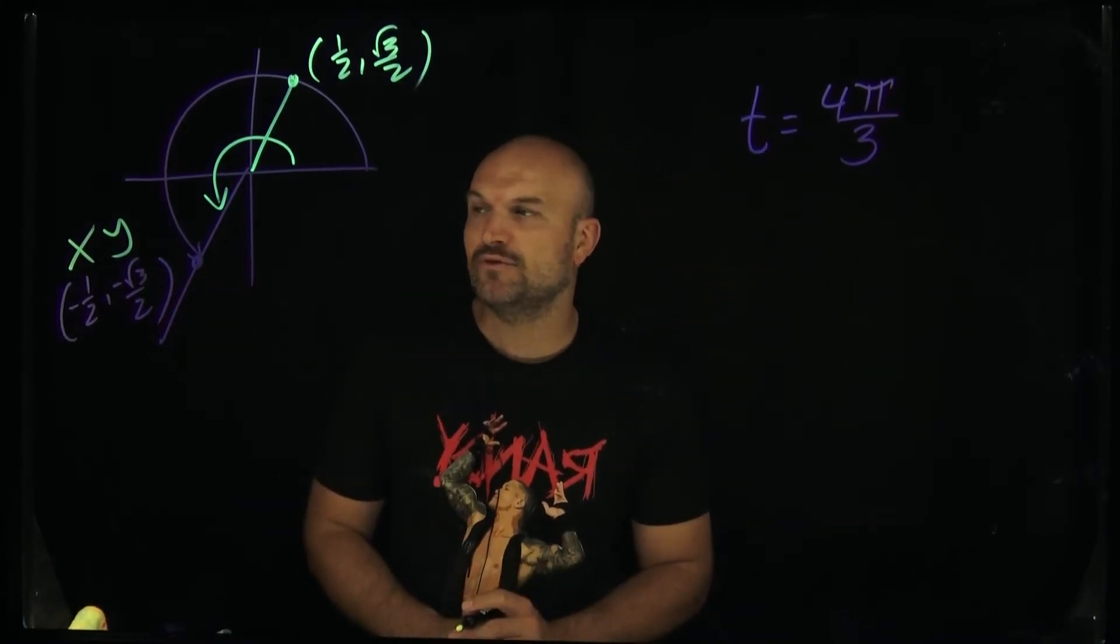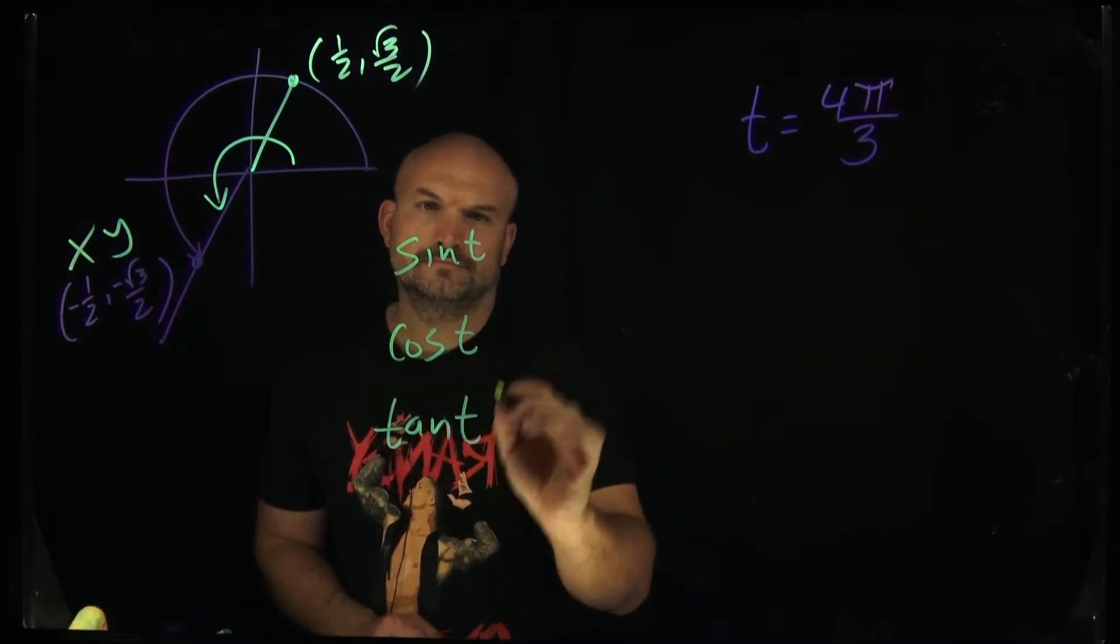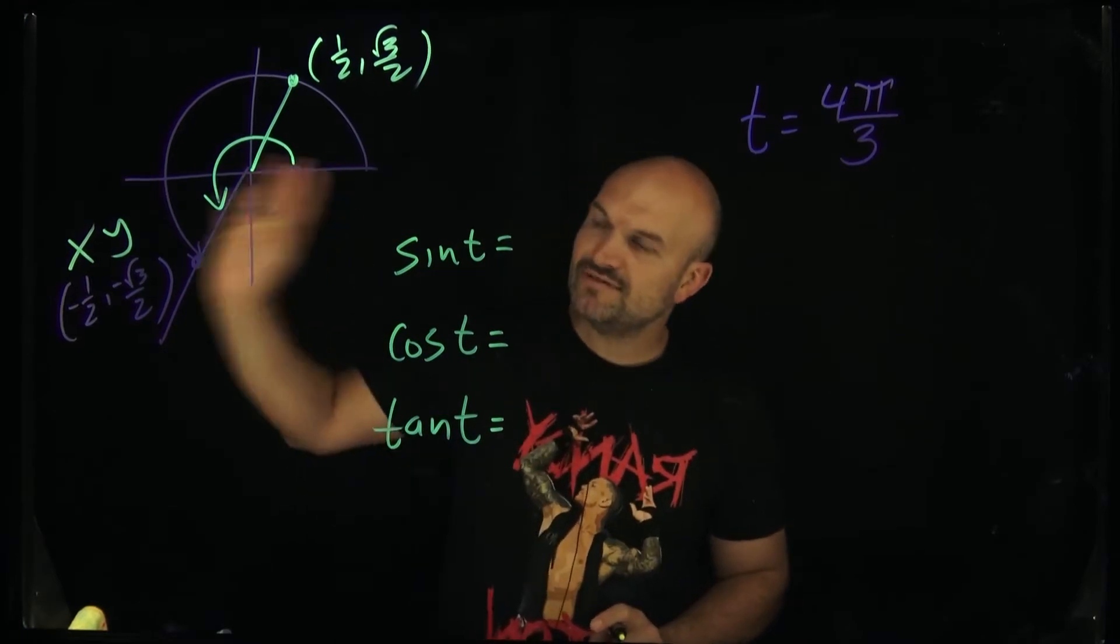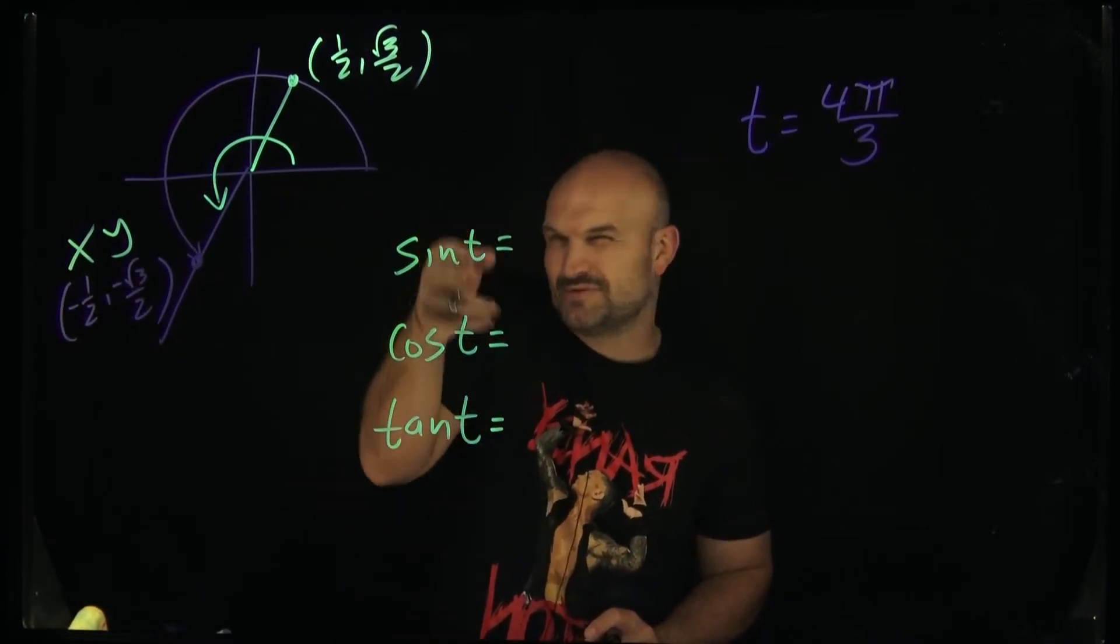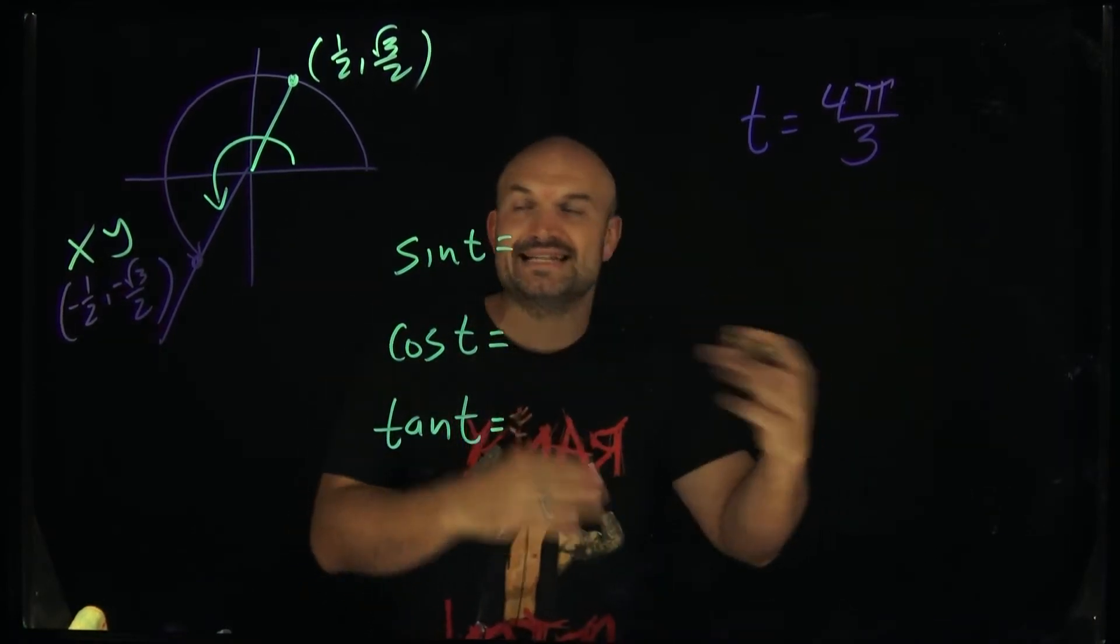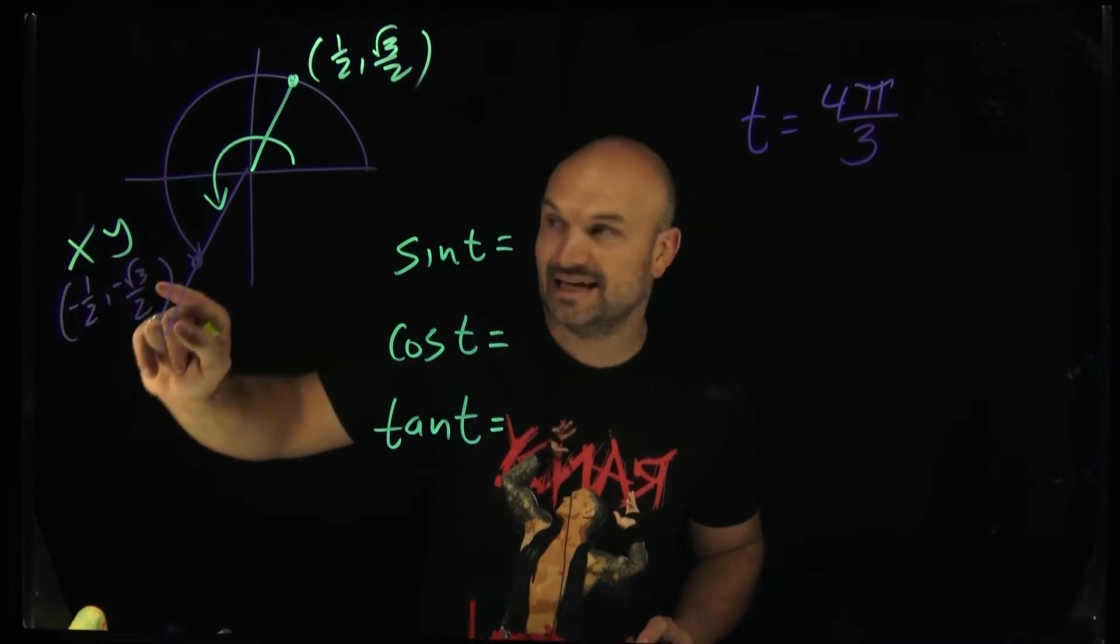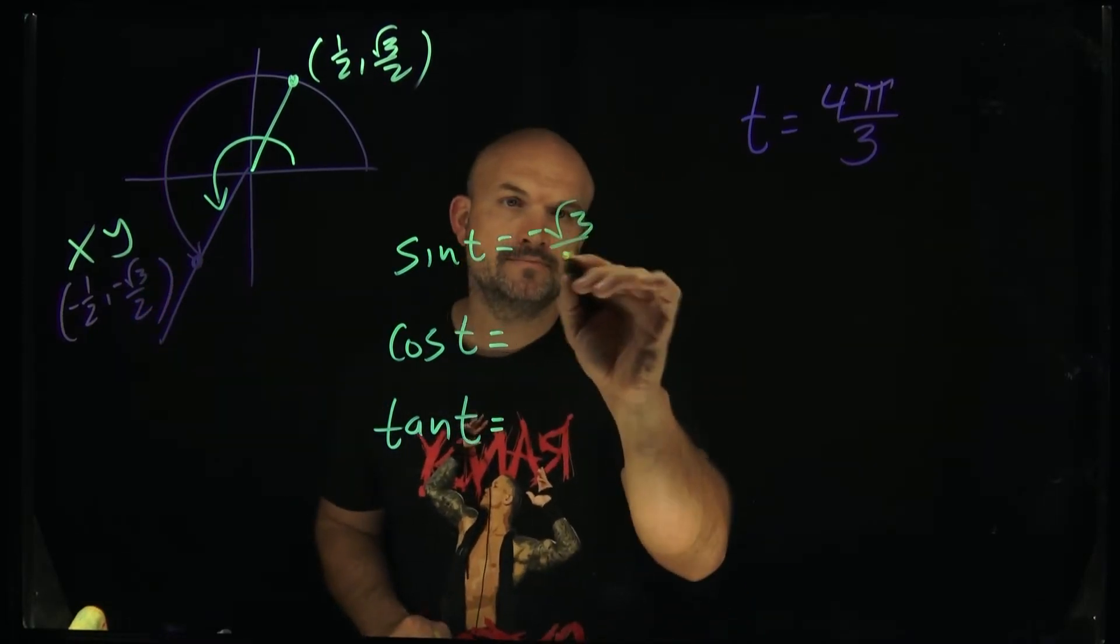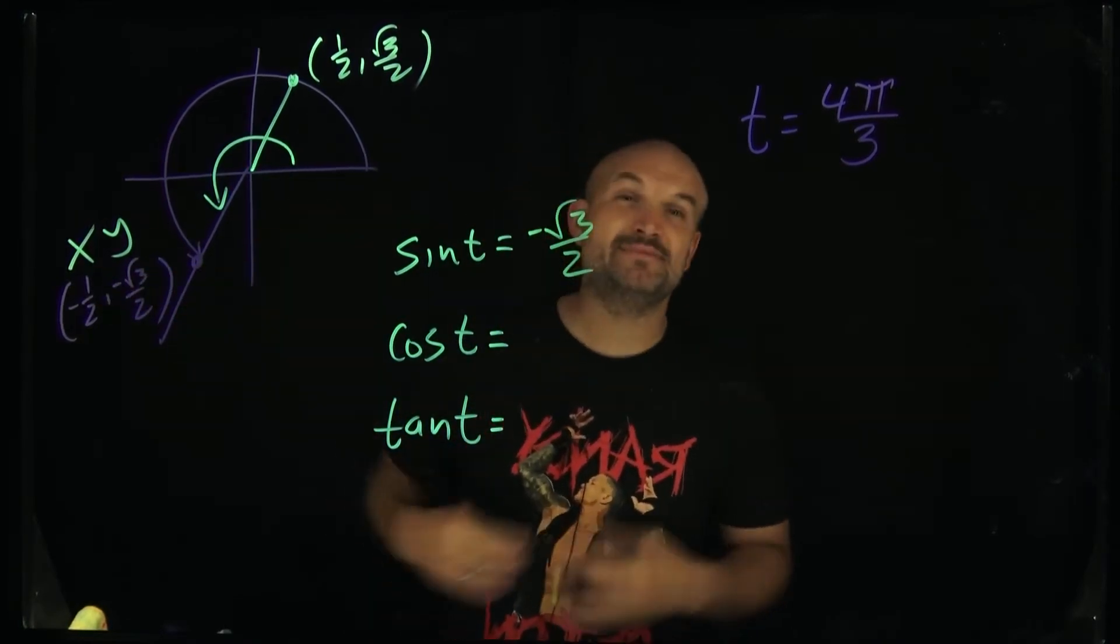So we have our x and y. Let's go and evaluate here for the sine, cosine, and tangent first. So whenever you're evaluating your trigonometric functions and you're given an angle, in this case it's 4π over 3, remember sine represents the y coordinate that is on the unit circle. So I go and take a look in my head and say, oh, the y coordinate is a negative square root of 3 over 2. For cosine, that's going to represent the x coordinate, and you can see over here that's going to be a negative 1/2.